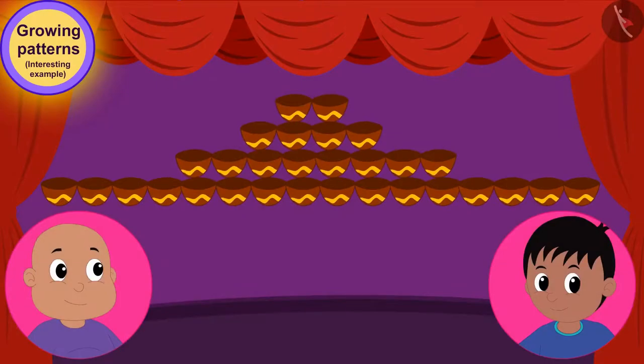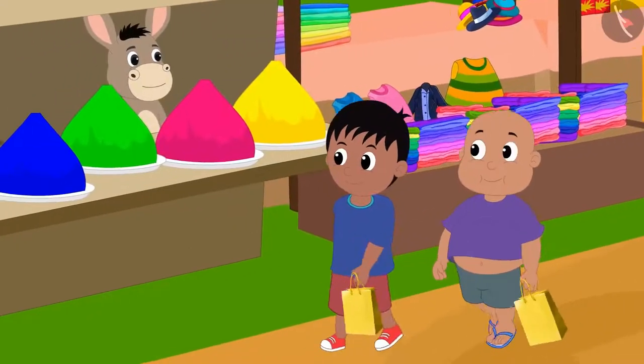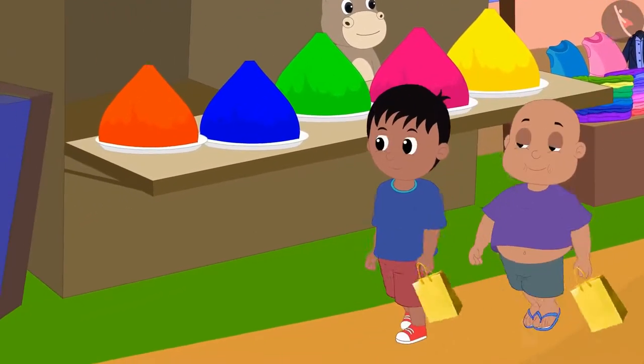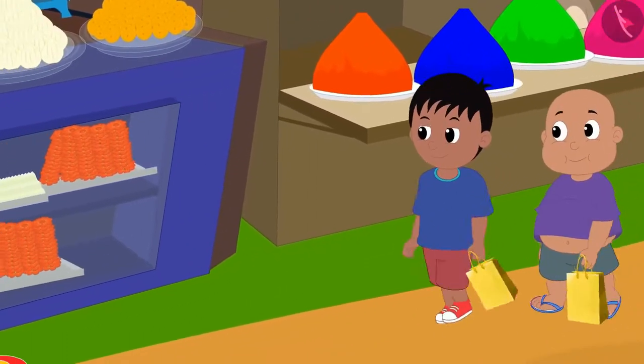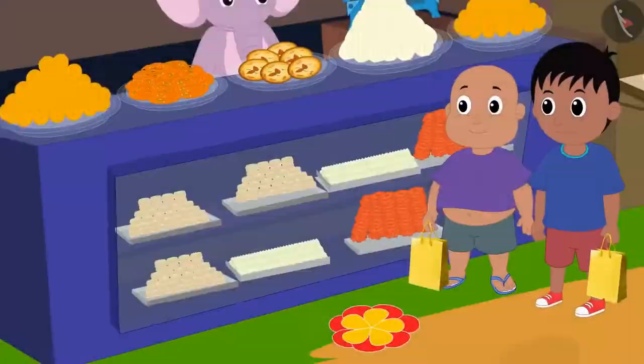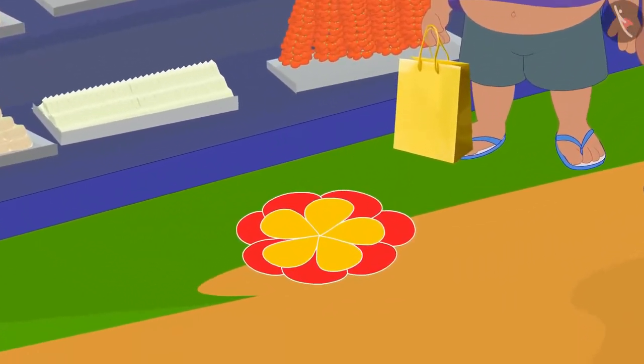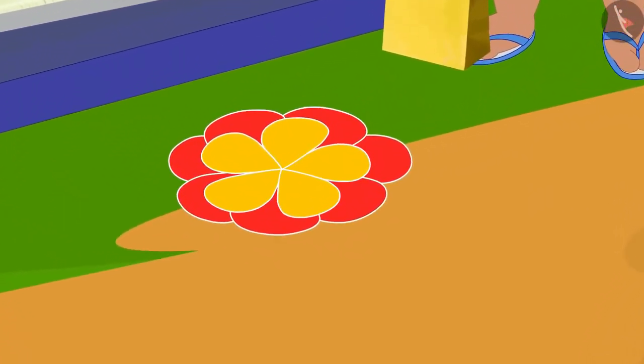Raju bought the decoration of the diyas. Now, Raju and Bablu have come to Appu's shop to buy sweets. Such a beautiful rangoli is made in front of Appu's shop.